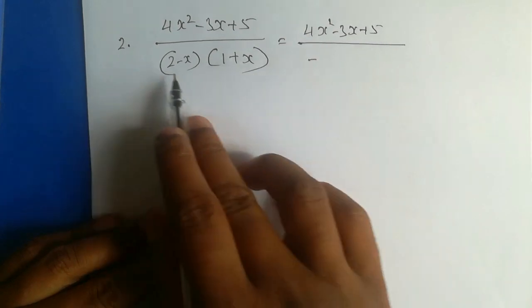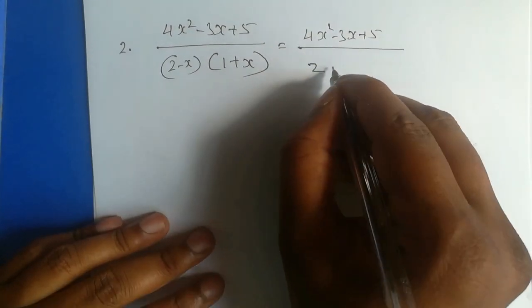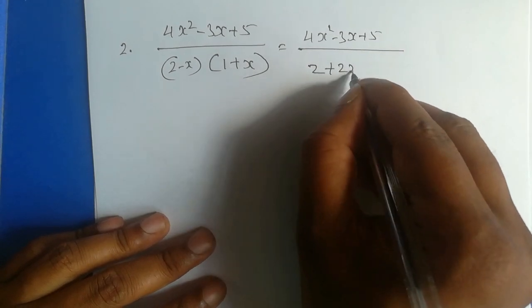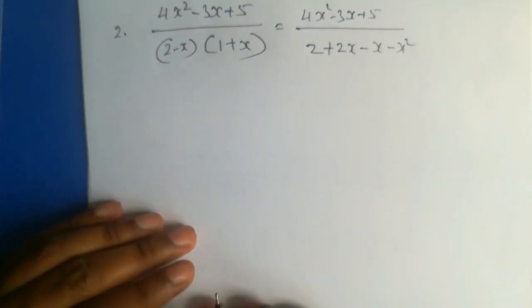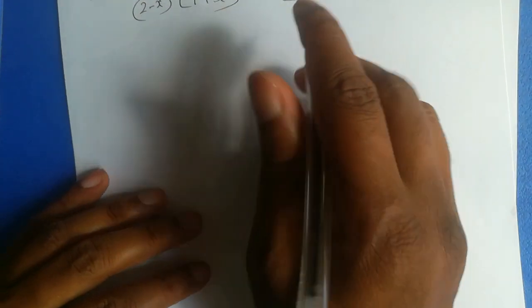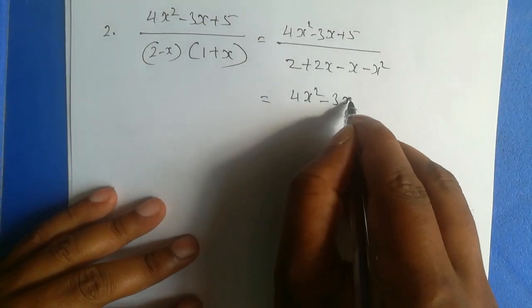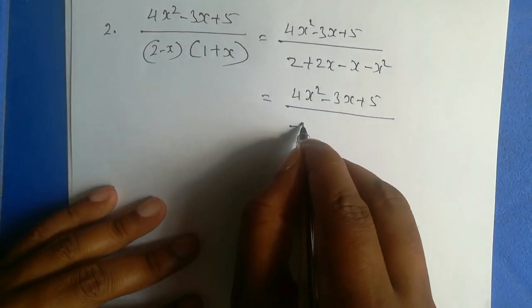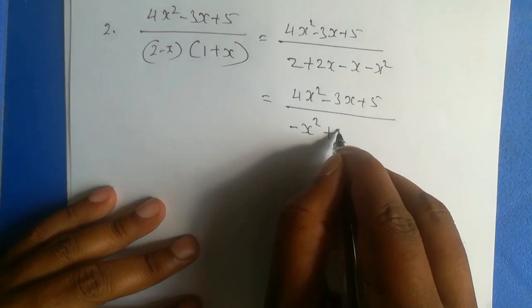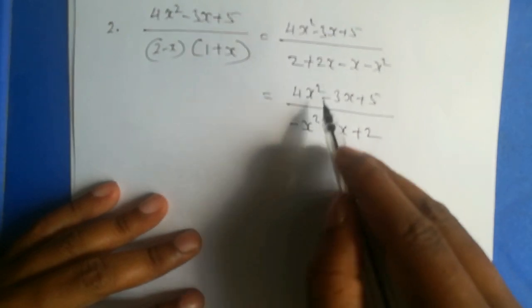Expand this to get 2 plus 2x minus x minus x squared, now simplify this. We have 4x squared minus 3x plus 5 divided by minus x squared plus x plus 2. Now this is a proper fraction.